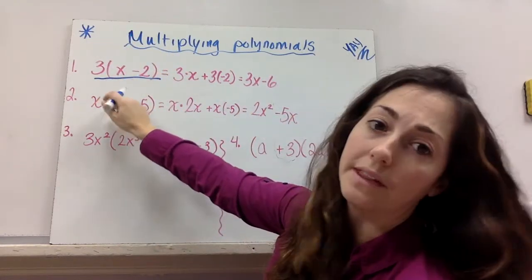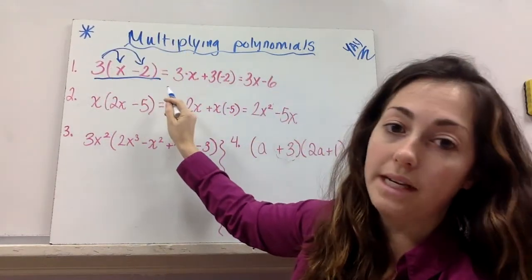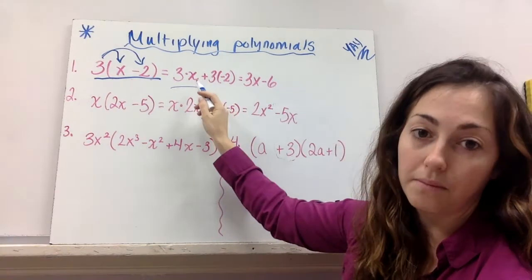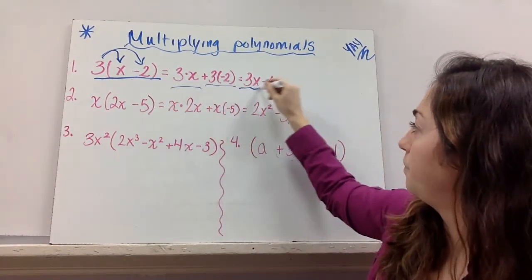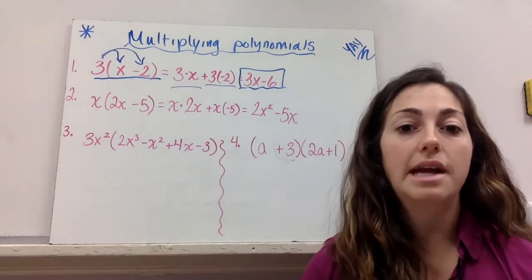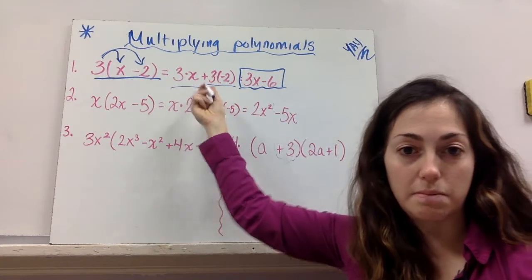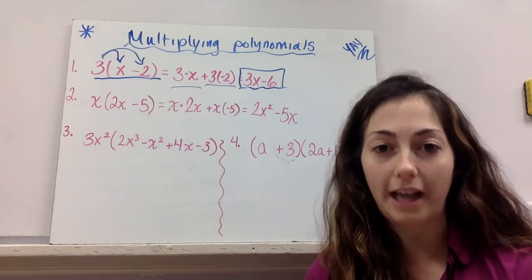So what you do, and you've done this, you do the distributive property. You multiply 3 times x, and 3 times that negative 2. And you get 3x minus 6. Now, you never really are expected to do this middle step when it's so simple, but when it gets complicated, you might have to.